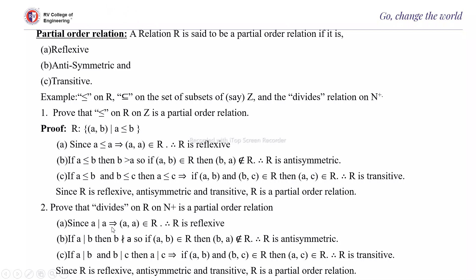We will prove one and you have to prove the others similarly. Prove that ≤ on Z is a partial order relation. Suppose R = {(a,b) : a ≤ b}. Since a ≤ a, (a,a) belongs to R — therefore R is reflexive. If a ≤ b, then b > a, so if (a,b) belongs to R, (b,a) does not belong to R — therefore R is anti-symmetric. If a ≤ b and b ≤ c, then a ≤ c, so if (a,b) and (b,c) belong to R, (a,c) belongs to R — therefore R is transitive. Since R is reflexive, anti-symmetric, and transitive, R is a partial order relation.